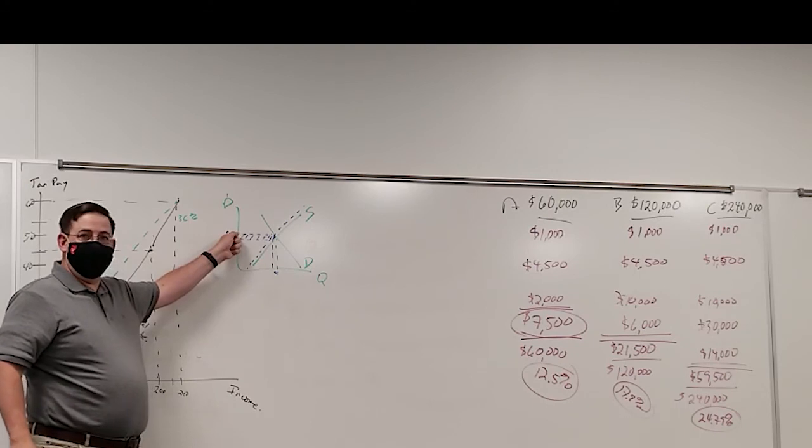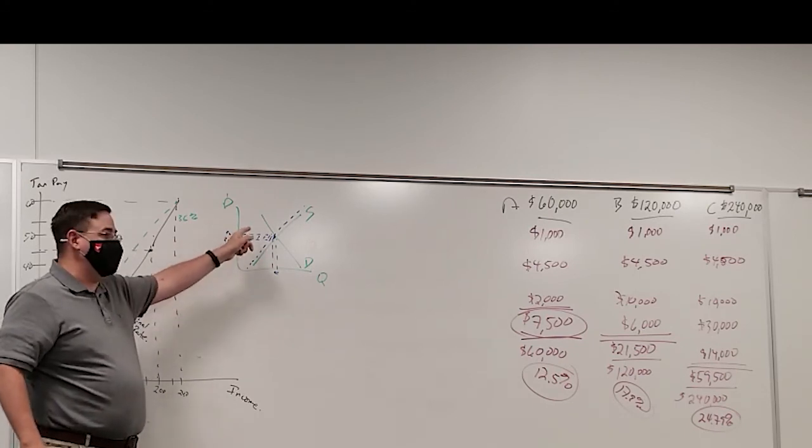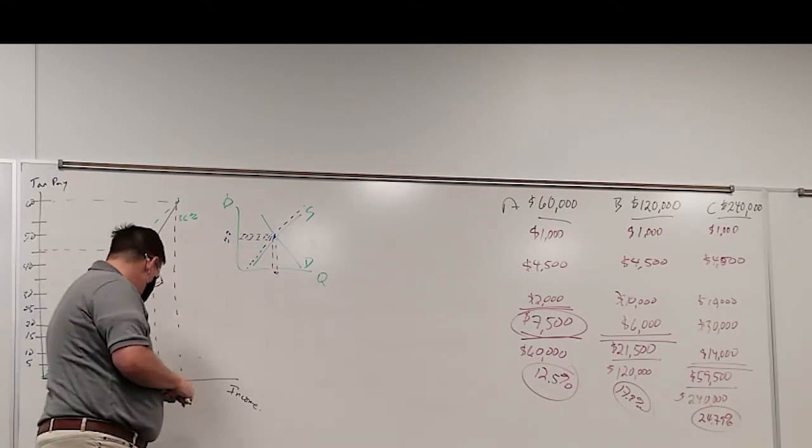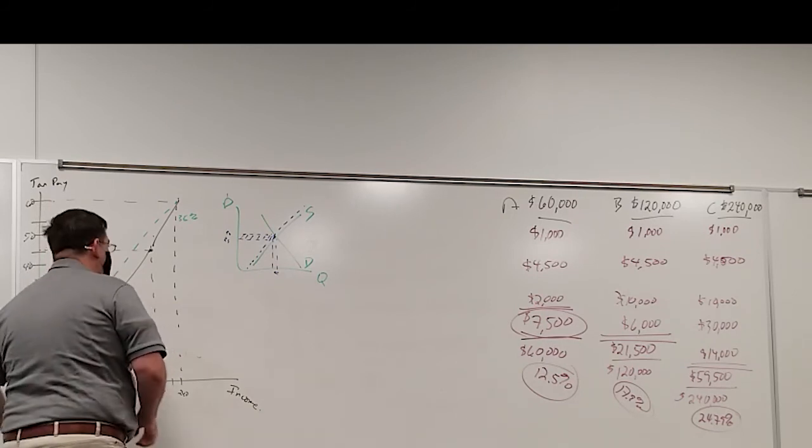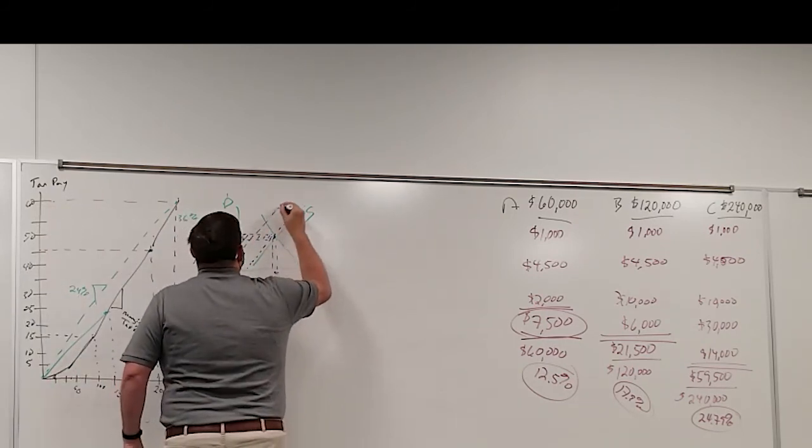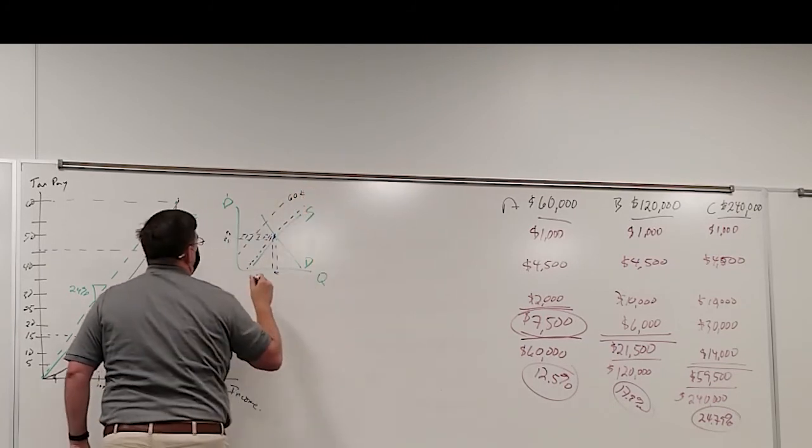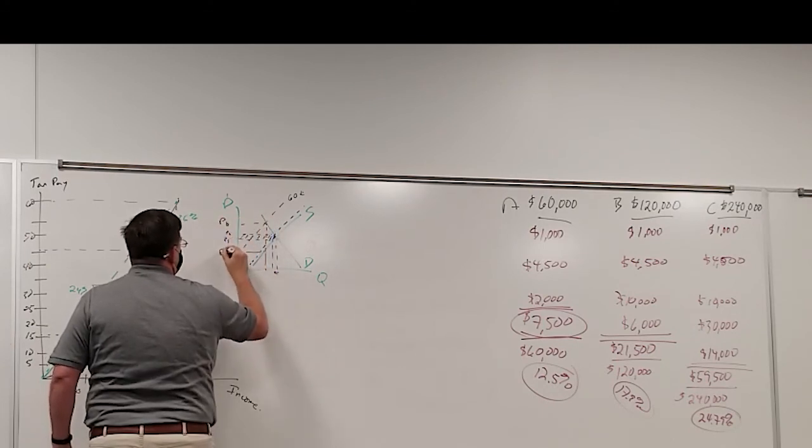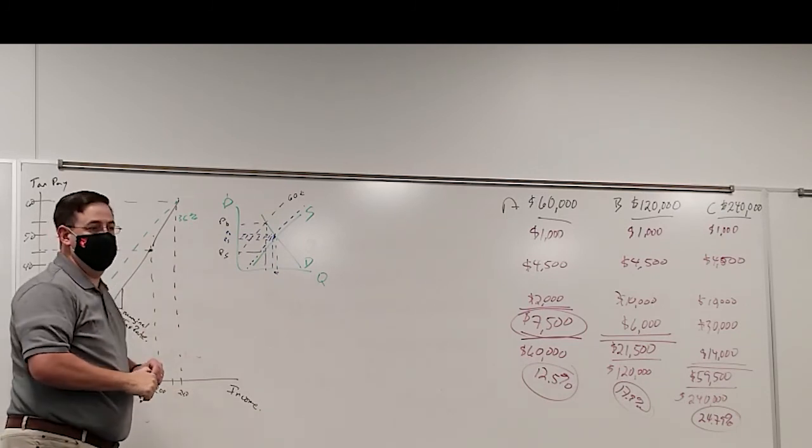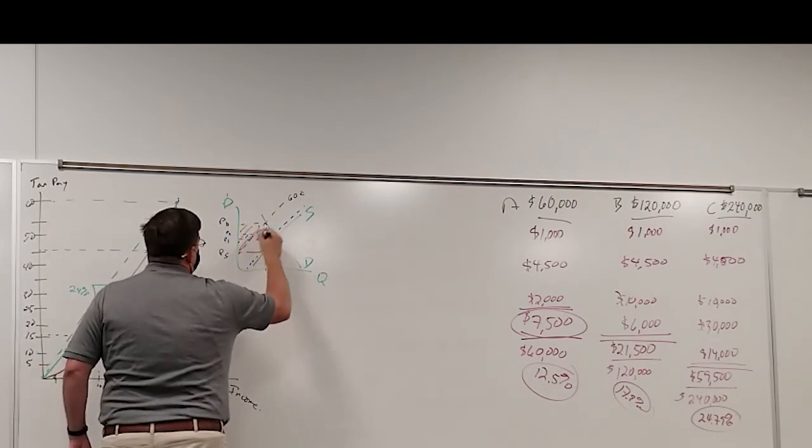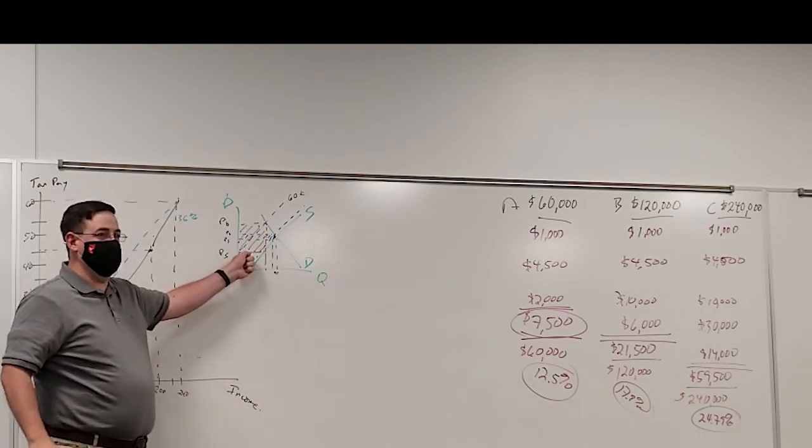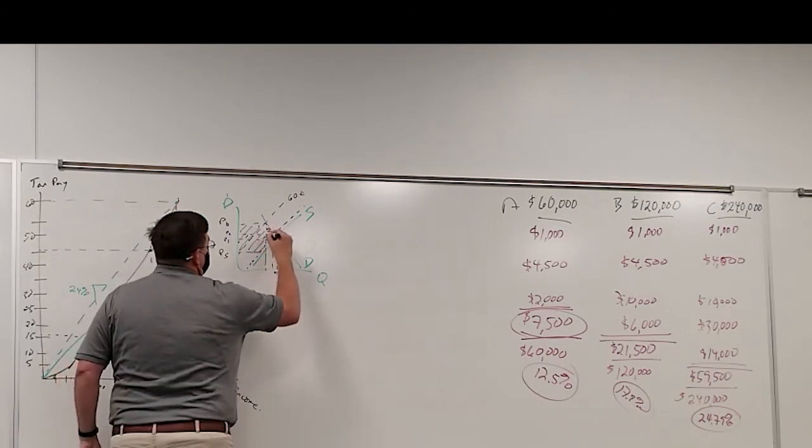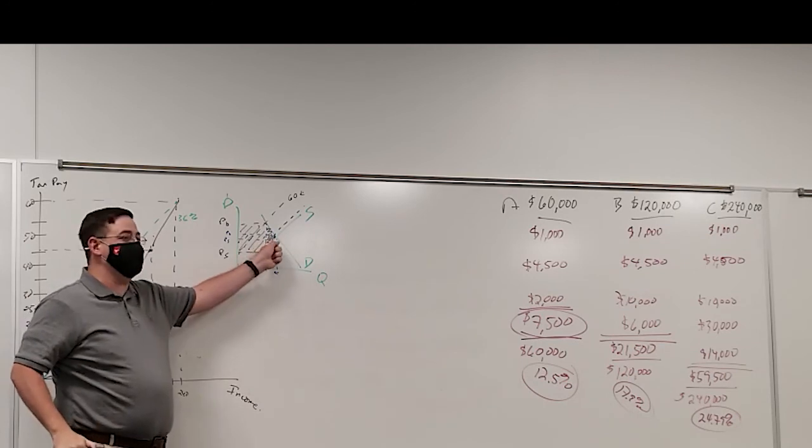What happens if we increase the size of the tax? What if we charge 60 cents a bottle for beer? In that case, the price that the buyer pays and the price that the seller gets become more separated from one another. The tax revenue gets a lot bigger. It's that entire rectangle. So the tax revenue increases, and at the same time, the deadweight loss also increases. This whole triangle now is deadweight loss.